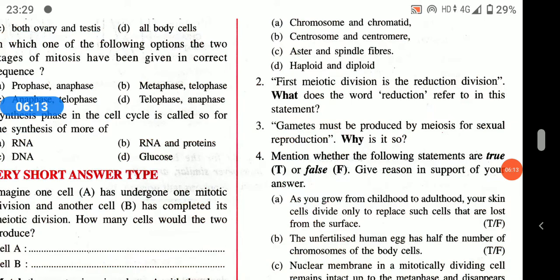The first meiotic division is called the reduction division. The word 'reduction' refers to the fact that the number of chromosomes is reduced to half during meiosis — that is why it is known as reduction division.